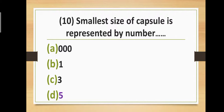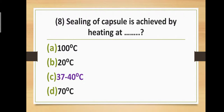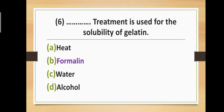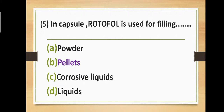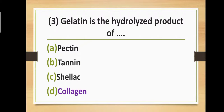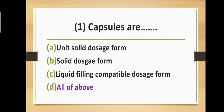Quick recap of answers: The smallest capsule size is represented by number 5. Blister pack and strip pack are commonly used for packing capsules. Sealing of capsule is achieved by heating at 37 to 40°C. Chemically, gelatin is a protein. Formalin treatment is used for the solubility of gelatin. Rotofol is used for filling pellets. Capsules are easy to swallow. Gelatin is the hydrolyzed product of collagen. The shell of soft gelatin capsule may be made elastic or plastic-like by the addition of sorbitol. Capsules are a unit solid dosage form, solid dosage form, or liquid filling compatible dosage form.